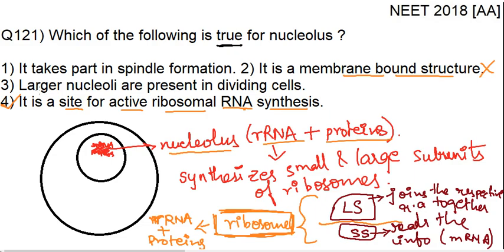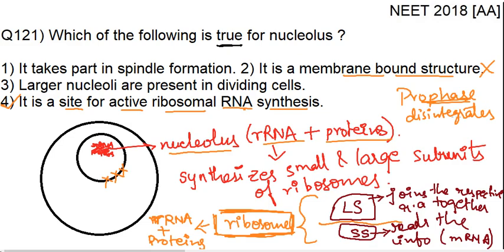Option 3 says larger nucleoli are present in dividing cells. No. When you study cell division, what happens in prophase? In prophase, the nuclear membrane and the nucleolus disintegrates. That means there is no nucleolus present in the dividing cells. Whenever a cell goes for cell division, the nuclear membrane and nucleolus are disintegrated, so nucleolus is not present in the dividing cells. So this option is wrong.